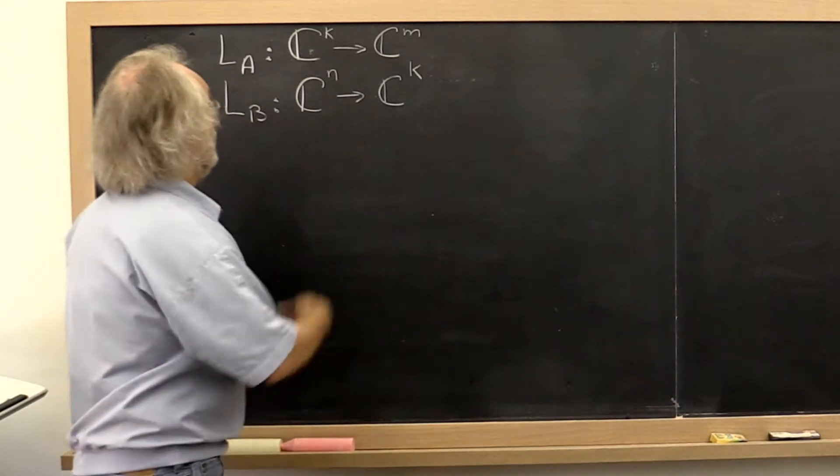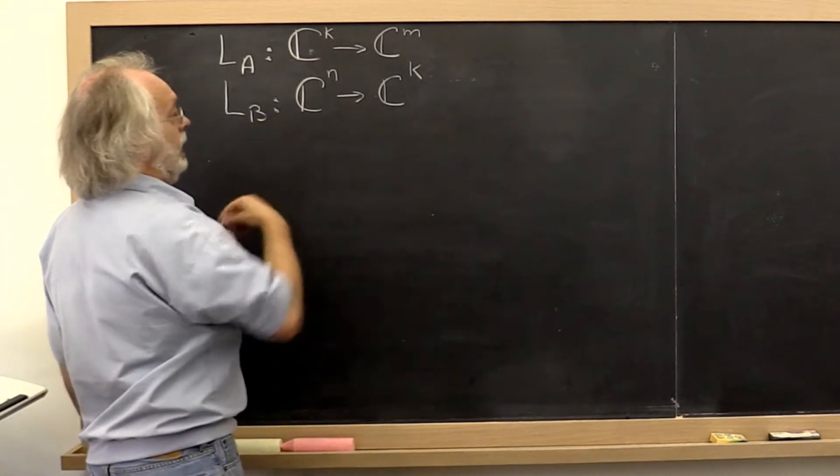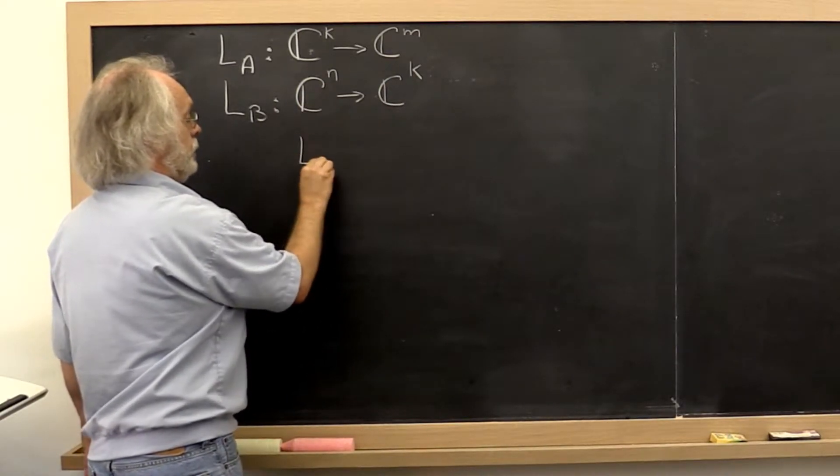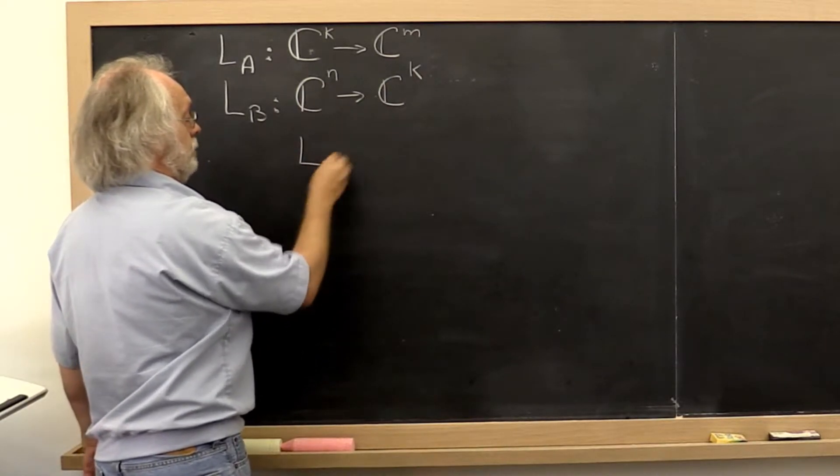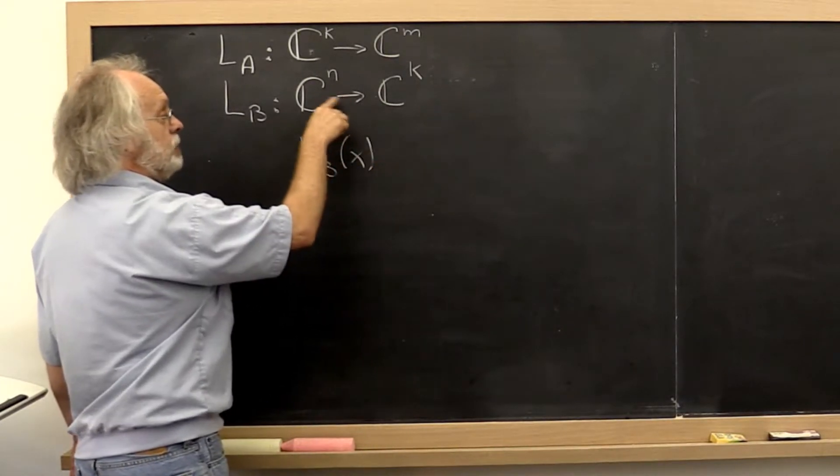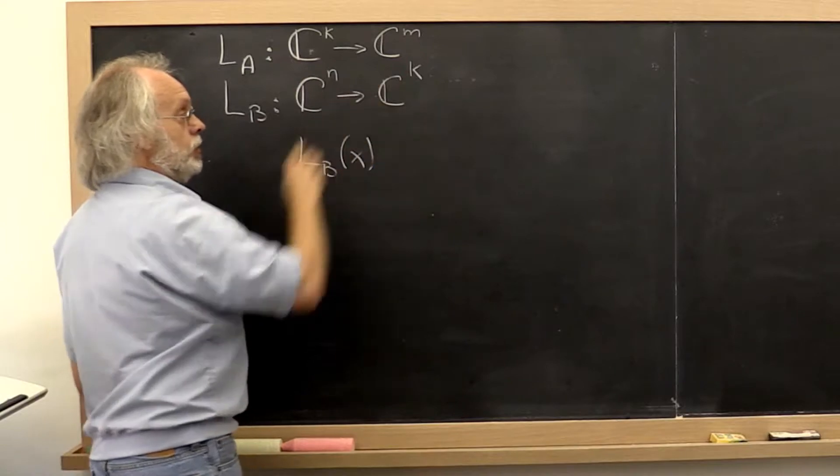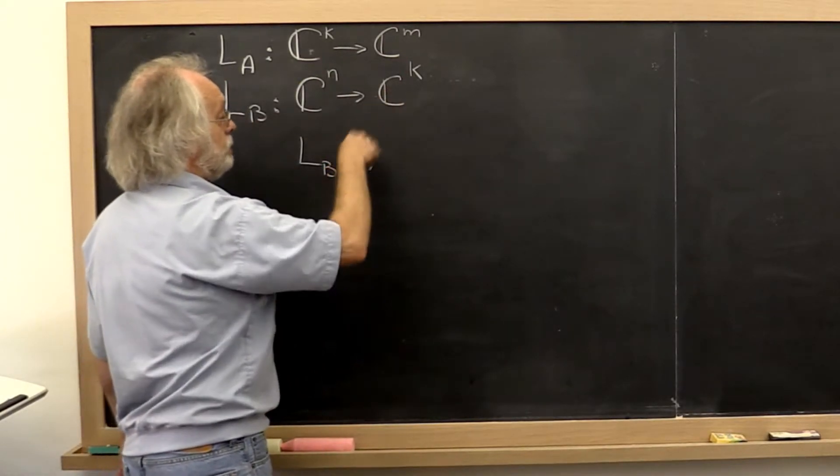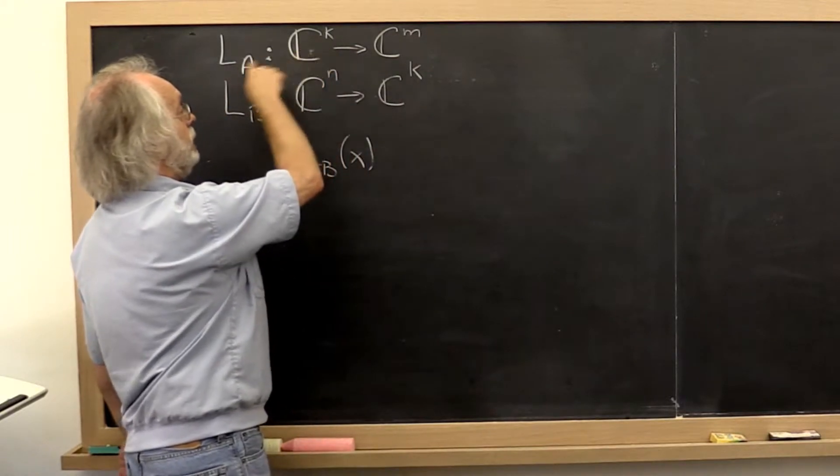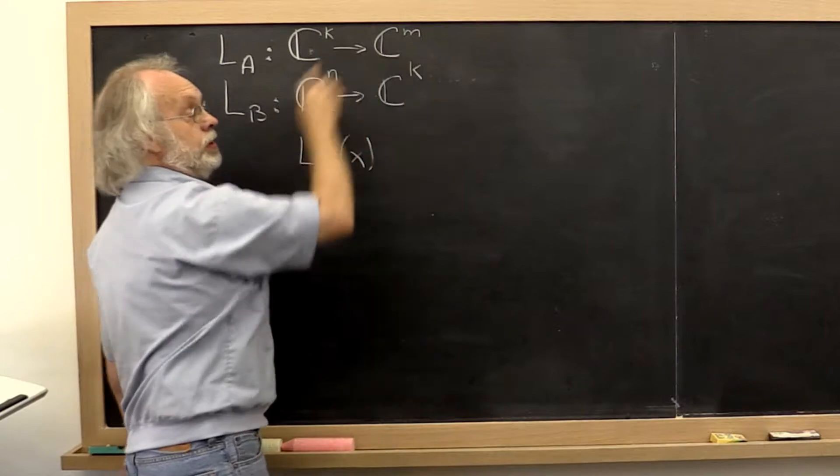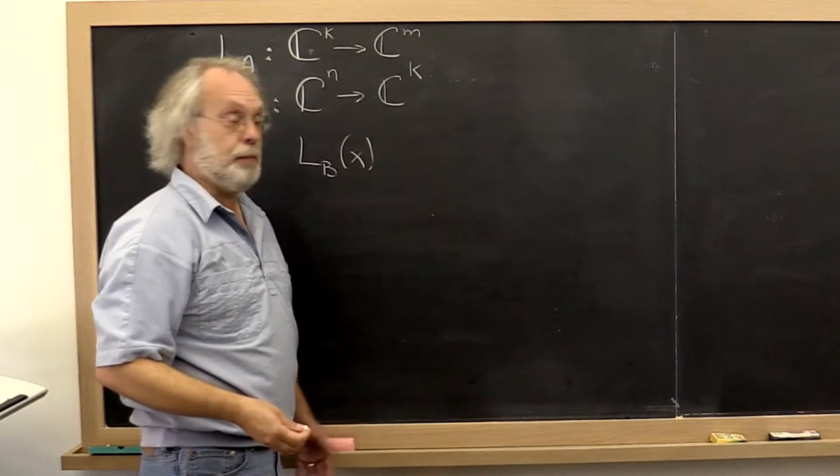Now given the vector x in C^n, we could first apply the linear transformation L_B to this. And notice that that results in a vector of size k. And then we can take that result and feed it into our linear transformation L_A to yield the vector of size m.